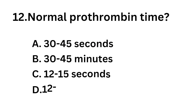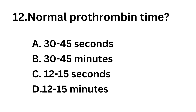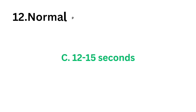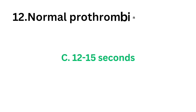Question number twelve: normal prothrombin time is — option A 30 to 45 seconds, option B 30 to 45 minutes, option C 12 to 50 seconds, option D 12 to 50 minutes. The correct answer is option C, 12 to 50 seconds.